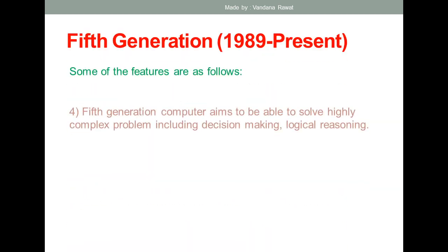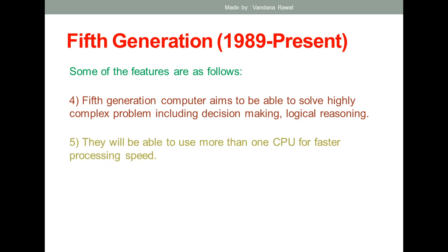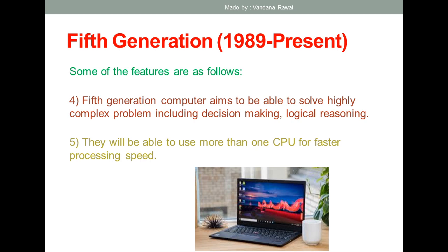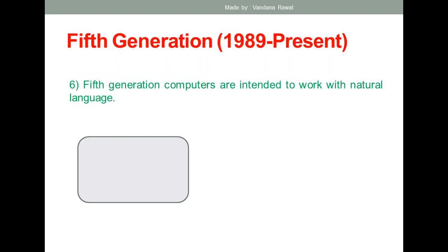More features of fifth generation computers: they aim to be able to solve highly complex problems, including decision-making processes, logical reasoning, etc. They will be able to use more than one CPU for faster processing speed. Using more than one CPU — like in a supercomputer — is possible in the fifth generation of computers. This is basically the evolution in the fifth generation.